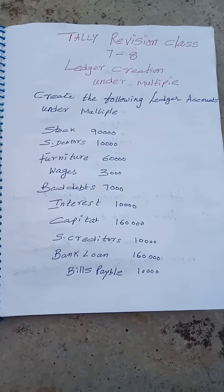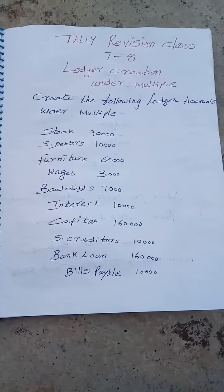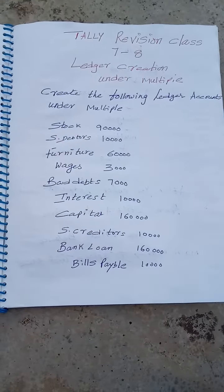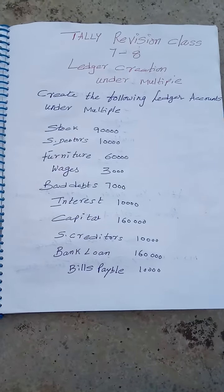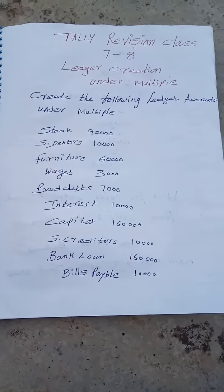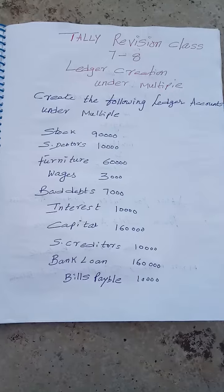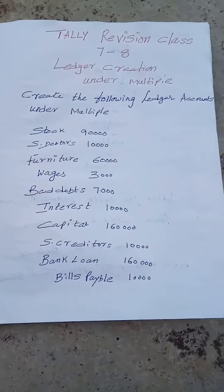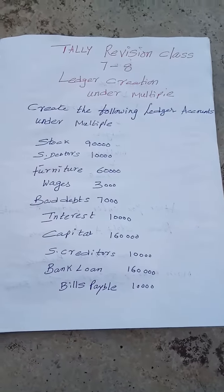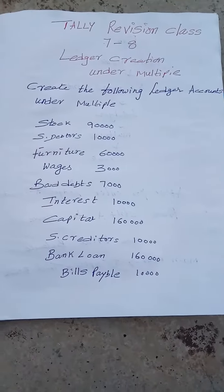Furniture under fixed assets, wages under direct expenses, bad debts, interest, capital under capital account, sundry creditors, and bank loan under long-term loan.